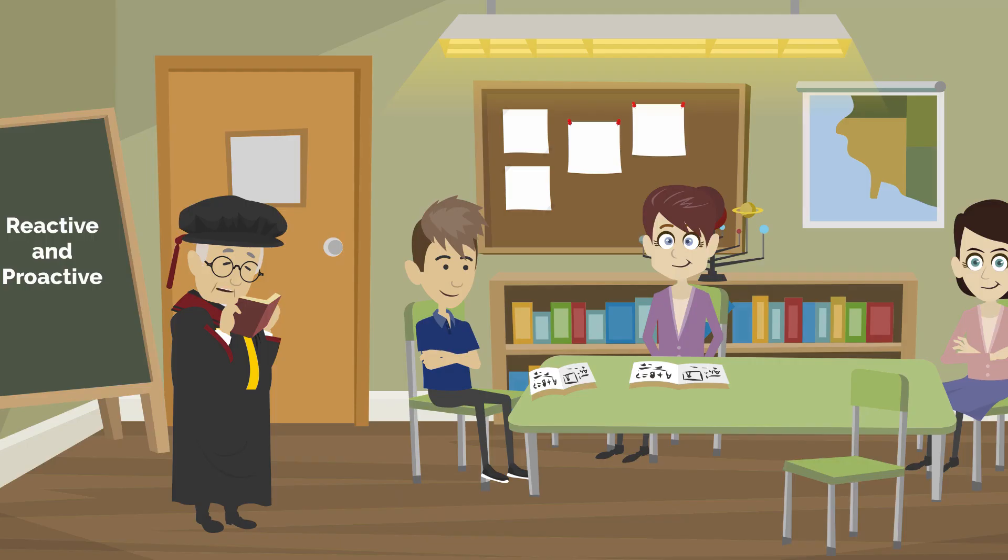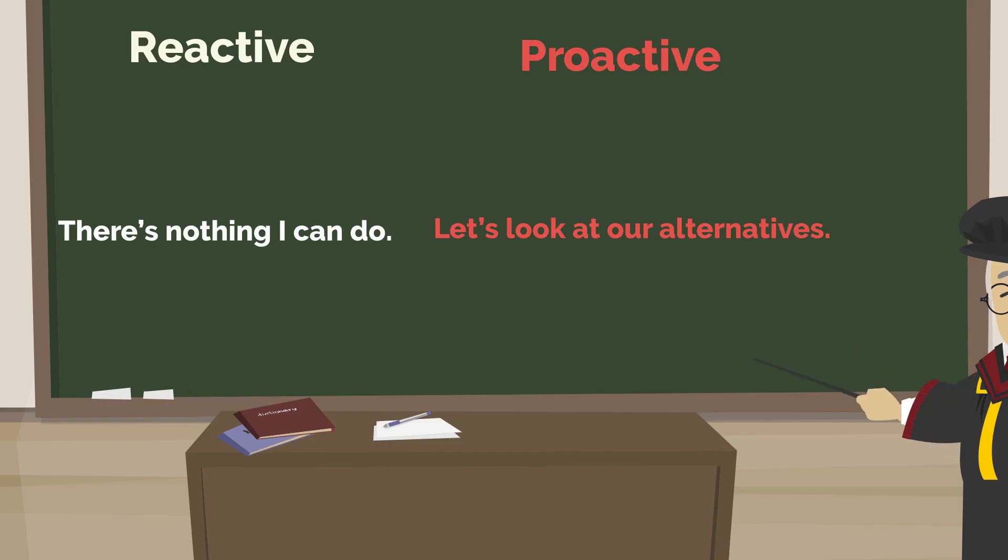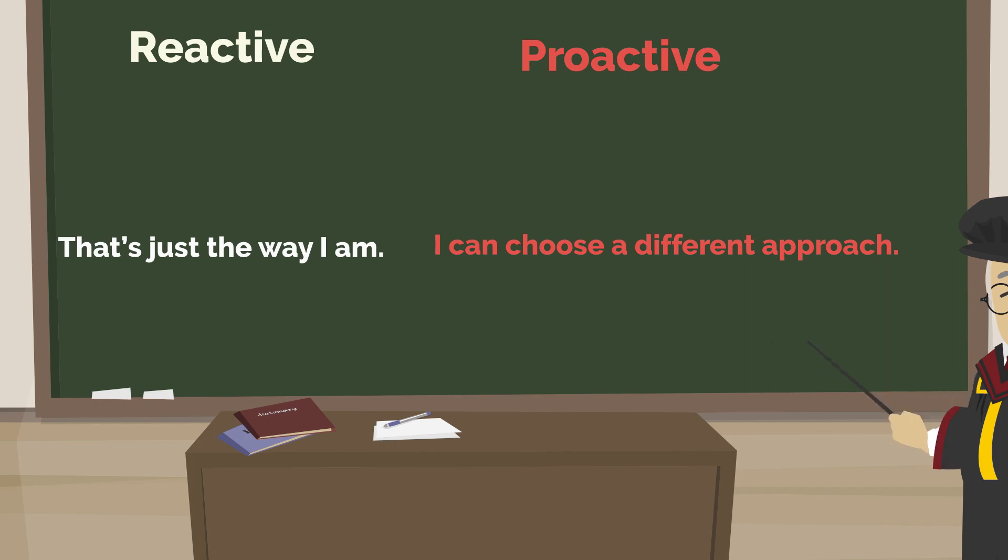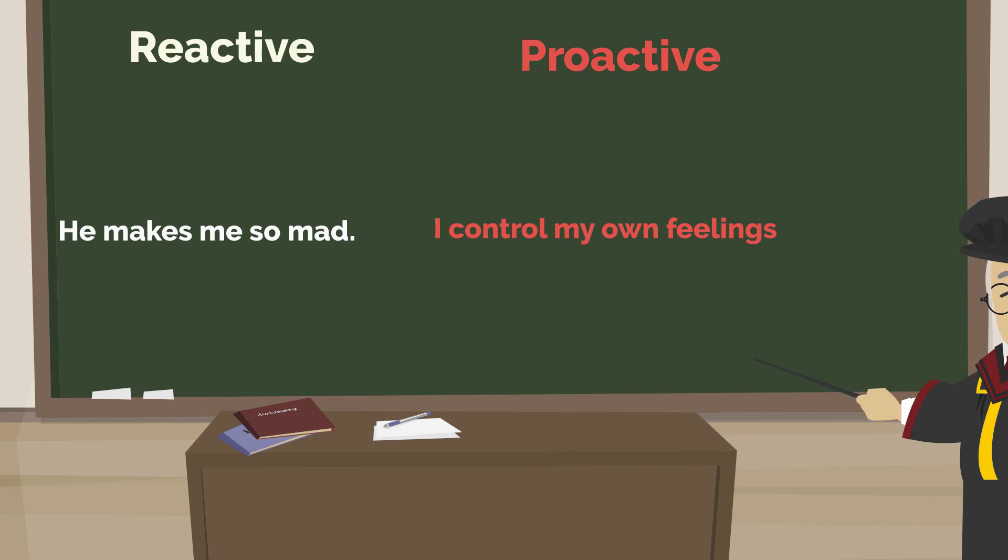Now let's have a look at how proactive people's responses compare to reactive people. Instead of 'there is nothing I can do,' proactive people say, 'let's look at our alternatives.' Instead of 'that's the way I am,' proactive people say, 'I can choose a different approach.' Instead of 'he makes me mad,' proactive people say, 'I control my own feelings.' Instead of 'they won't allow that,' proactive people say, 'I can create an effective presentation.'